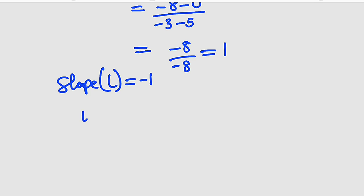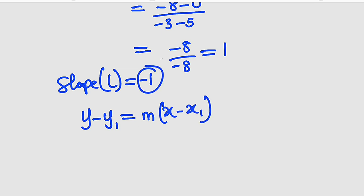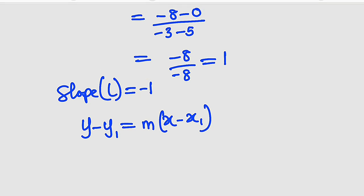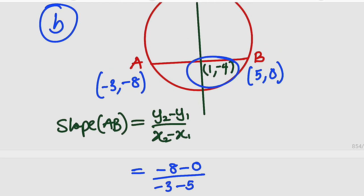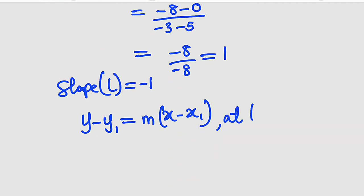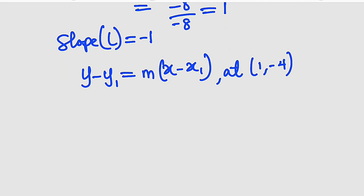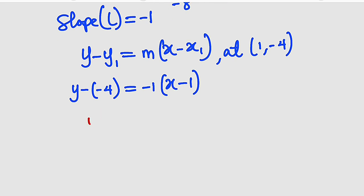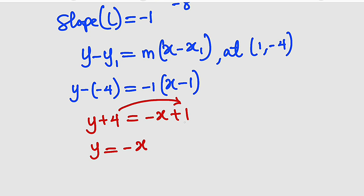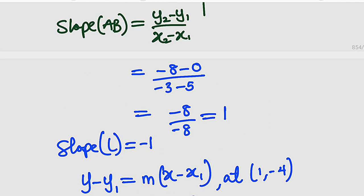To find the equation of the perpendicular bisector L, we use y minus y1 equal to m times x minus x1, with slope negative 1 and the midpoint 1, negative 4. Substituting: y minus negative 4 equal to negative 1 times x minus 1, which gives y plus 4 equal to negative x plus 1. Simplifying: y equal to negative x plus 1 minus 4, so y equal to negative x minus 3. This is the equation of the perpendicular bisector of segment AB.